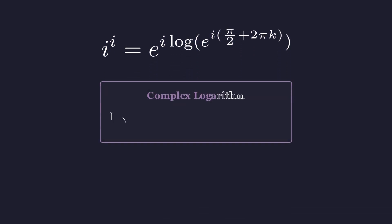But hold on, we can't just cancel the log and the exponential. In the complex world, the logarithm is multivalued, the log of e to the z is z, plus any integer multiple of 2 pi i.